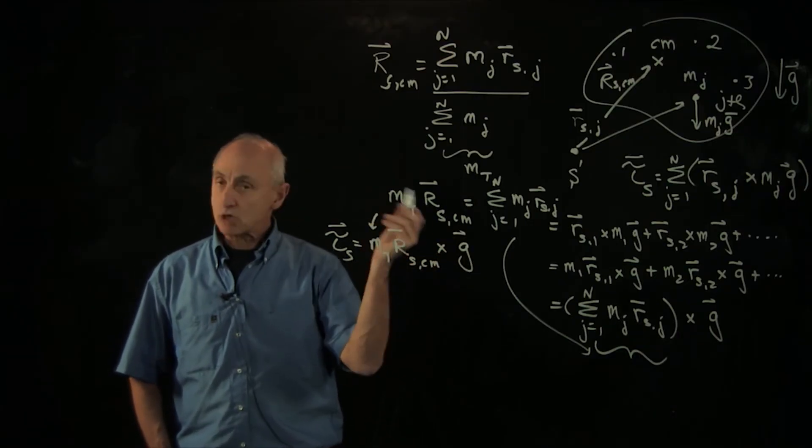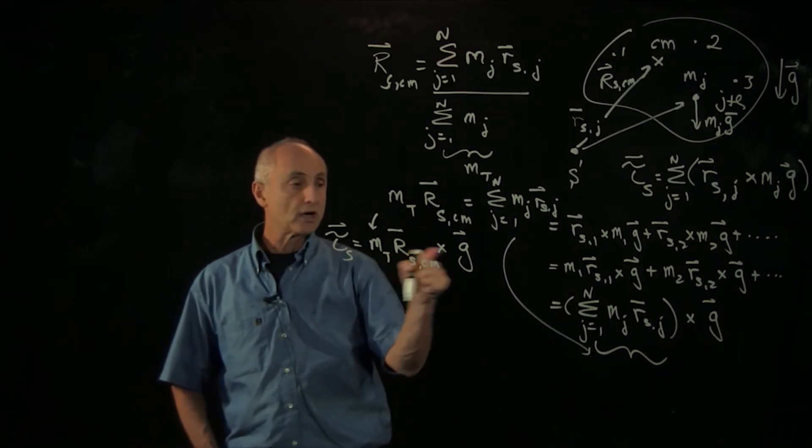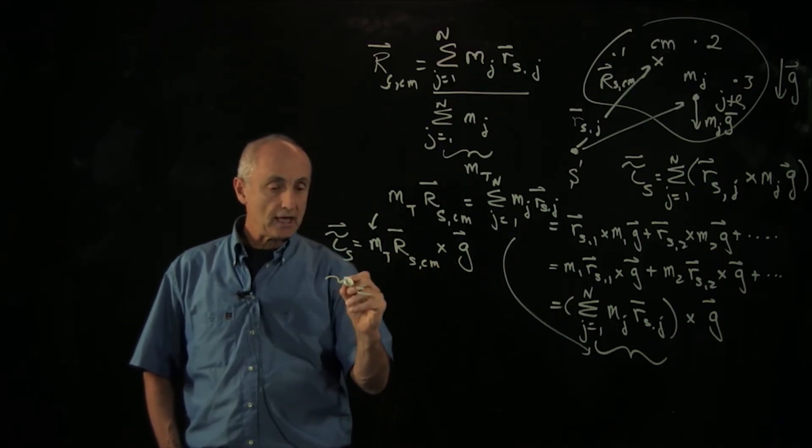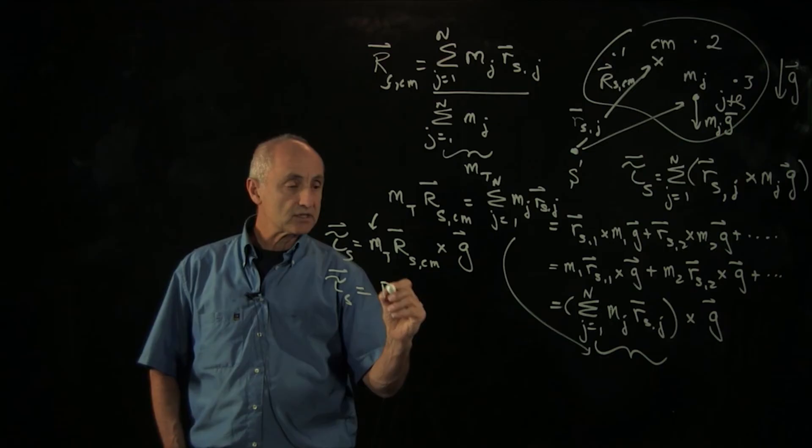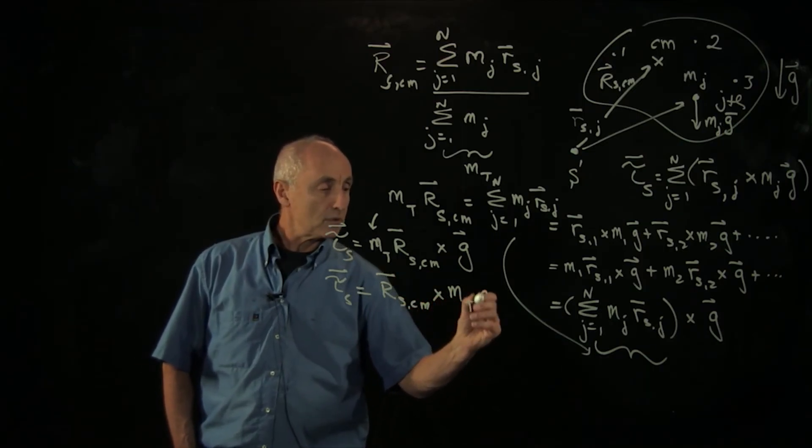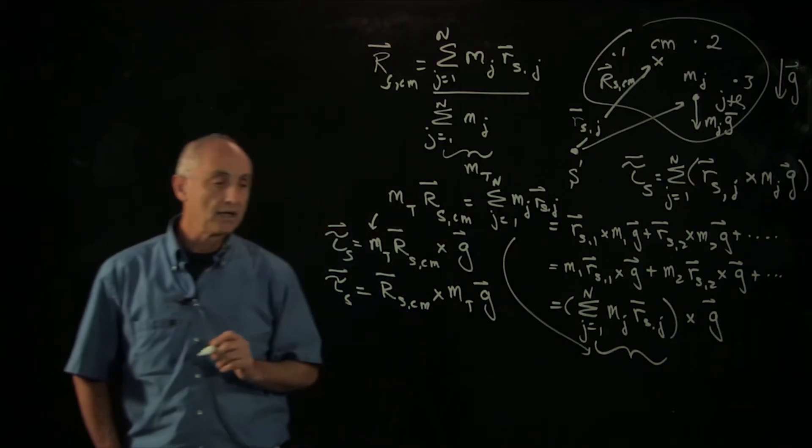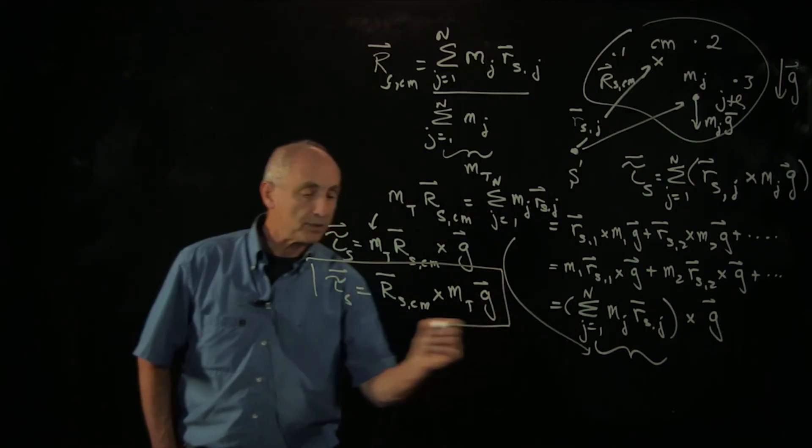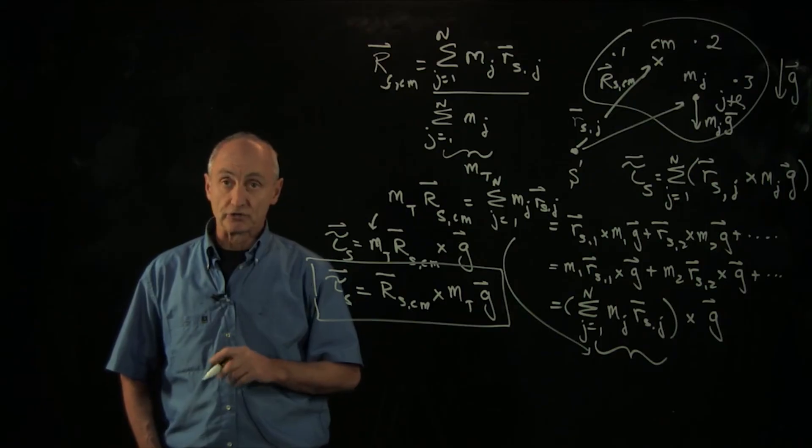Now remember again, m total is a scalar. The cross product is between these two vectors. And so finally, we write this as rscm cross m total g. And this is how we apply the gravitational force to a system of particles.